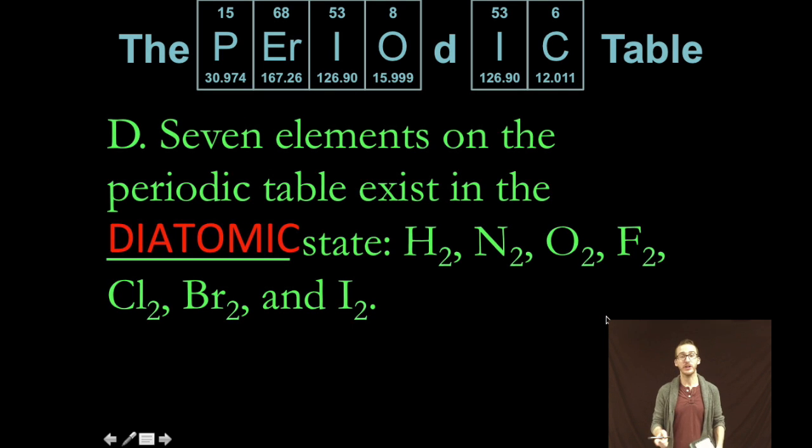And then lastly don't forget about those seven diatomic elements. Have no fear of ice cold beverages or Brinklhoff. You use the mnemonic device that works best for you. In other words when they're by themselves you should always expect to see them as H2, N2, O2, F2, Cl2, Br2, and I2.